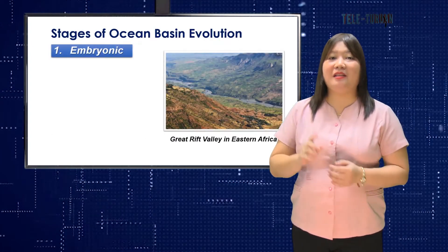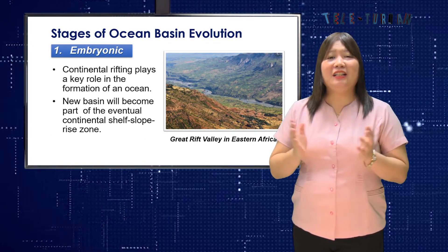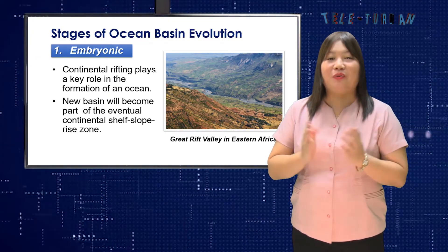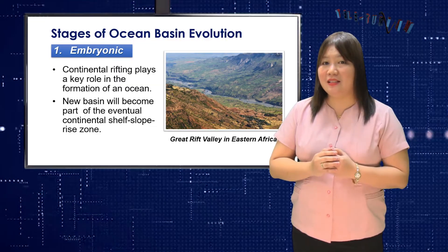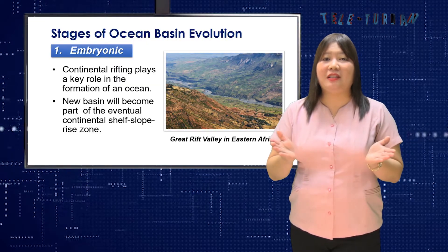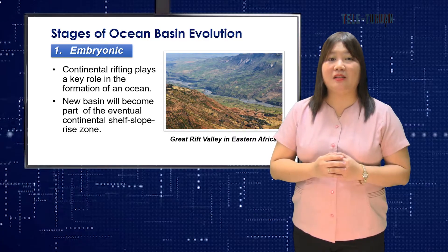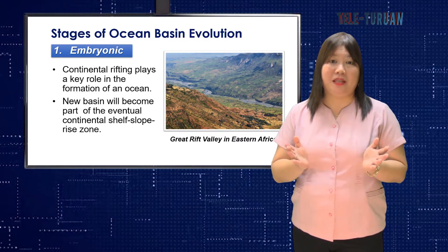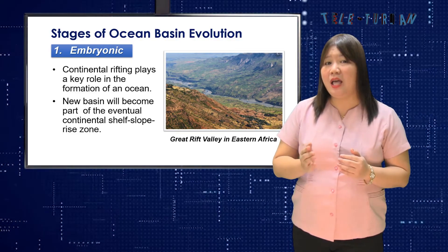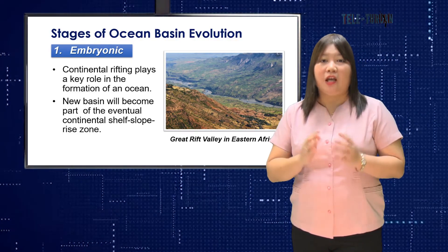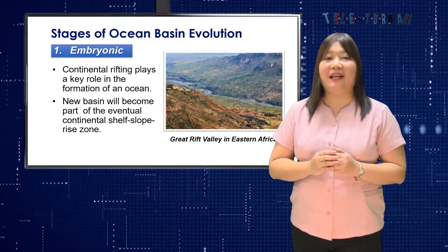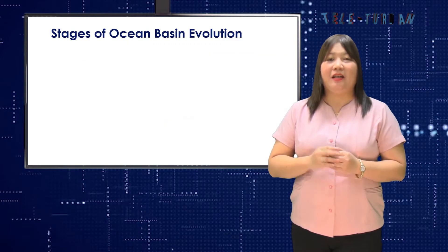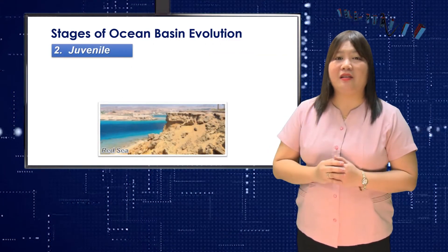Stage 1 is embryonic. Continental rifting plays a key role in the formation of an ocean. A rift valley forms as the continent begins to split. When separation occurs, sediments from the adjacent continent soon begin to build out into the new basin and will become part of the eventual continental shelf-slope-rise zone. An example is the Great Rift Valley in eastern Africa.